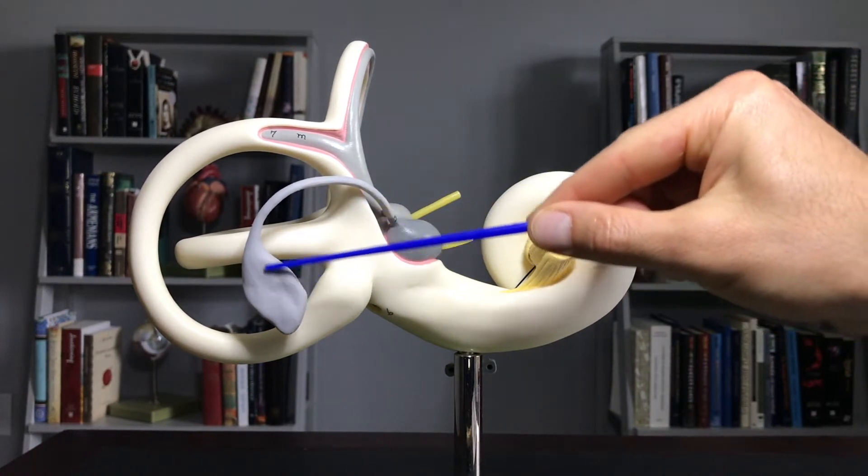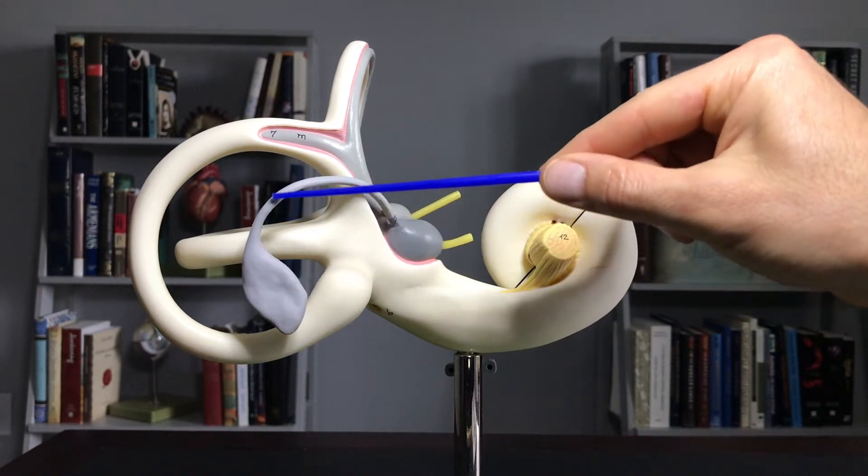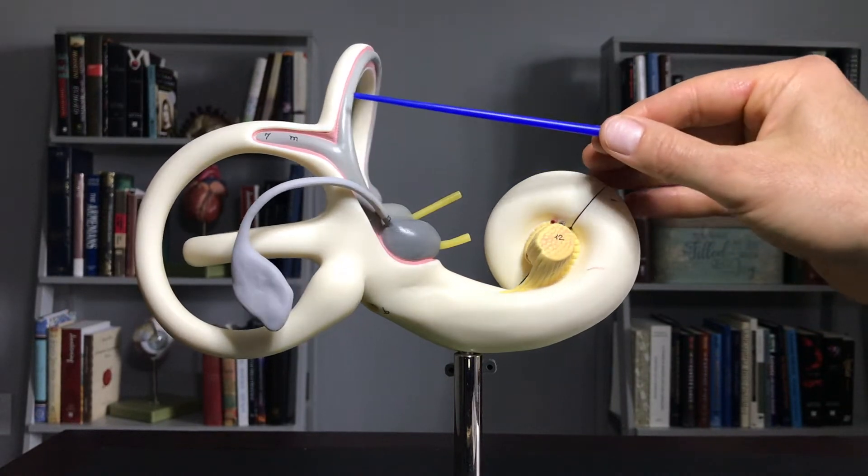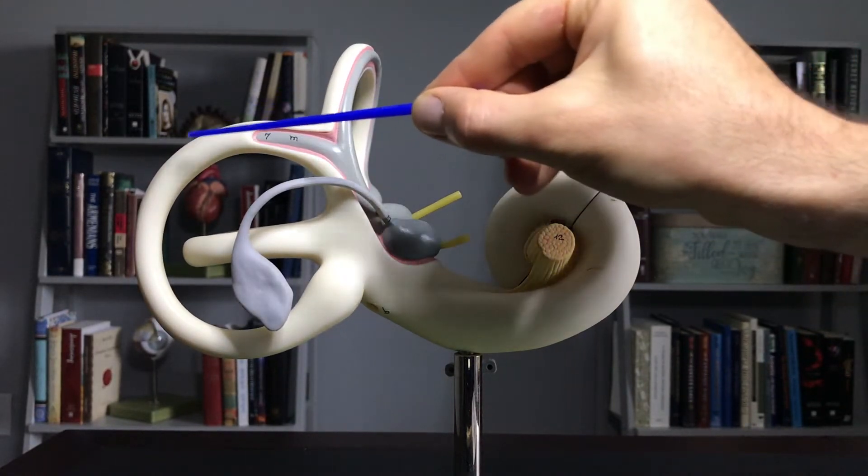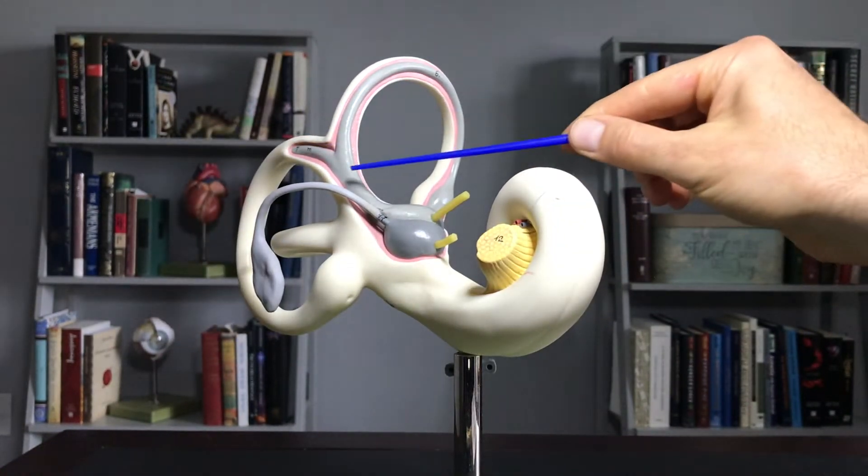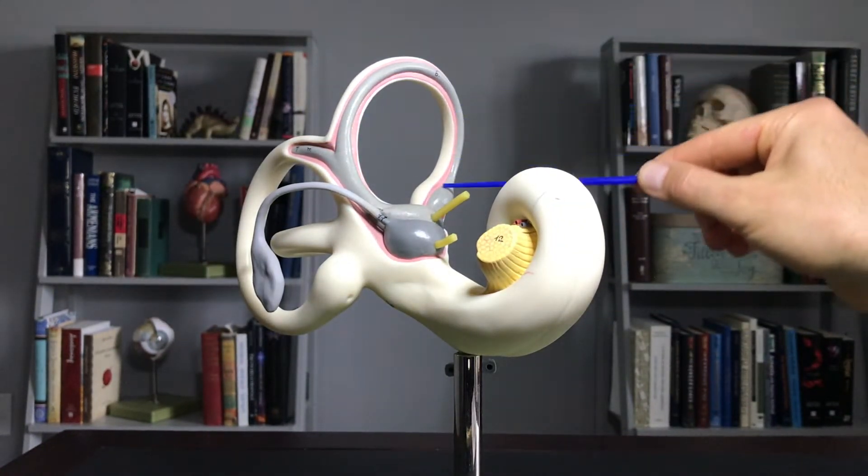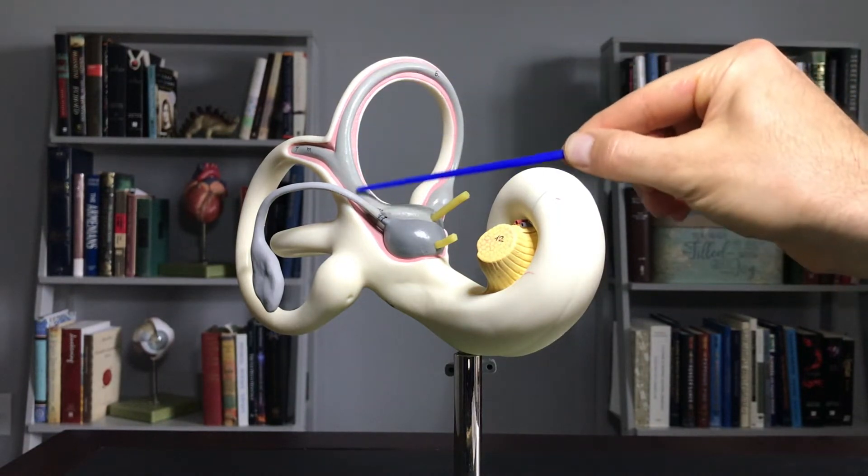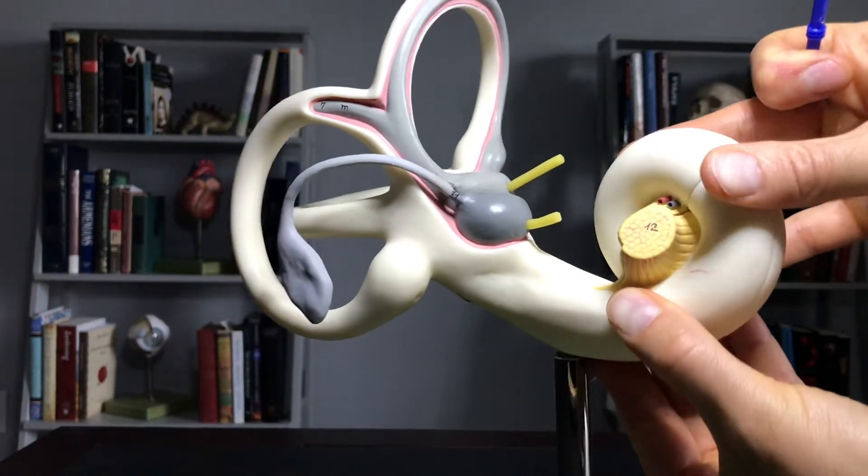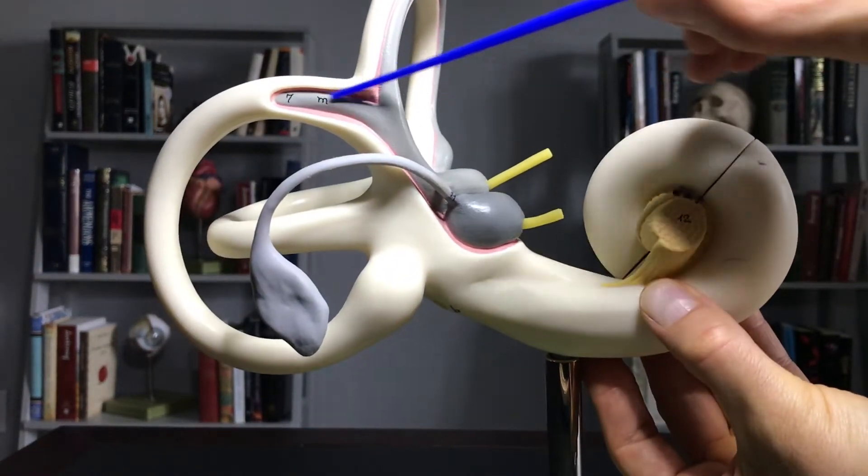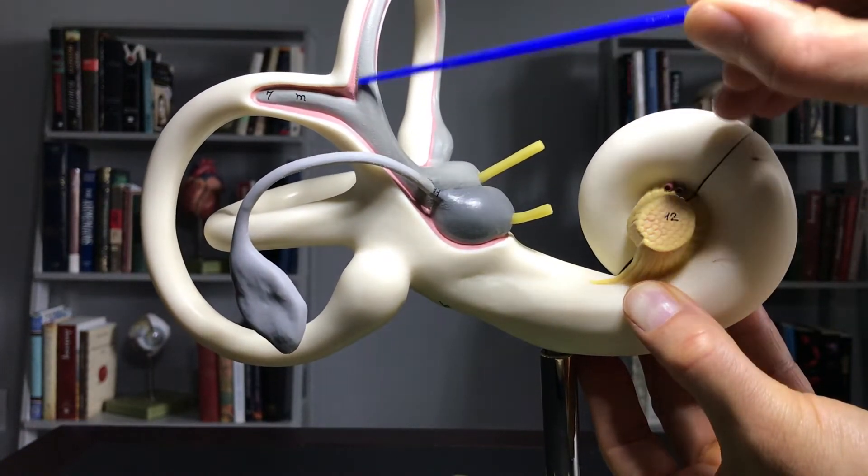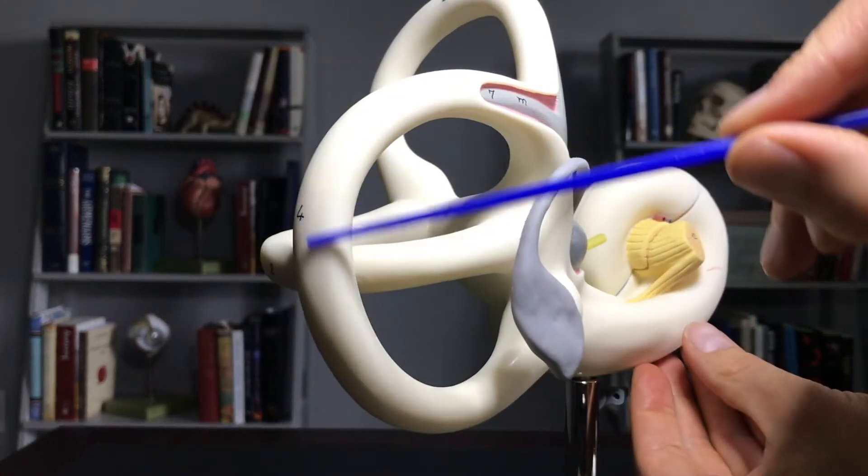We have the endolymphatic sac and the endolymphatic duct. Inside the semicircular canals, which have this bony look to them, you can see the semicircular ducts that run through. If I bring this a little bit closer, it almost looks like they're embedded within the semicircular canals.